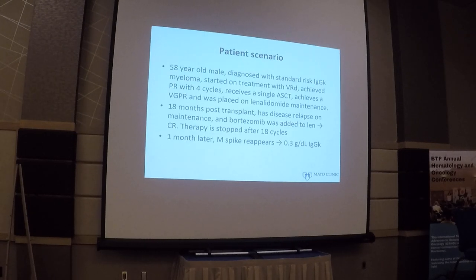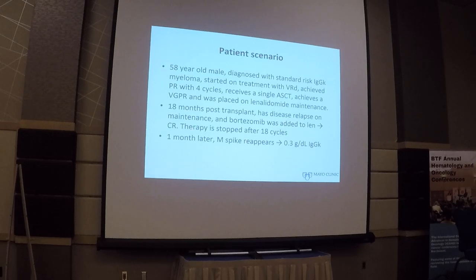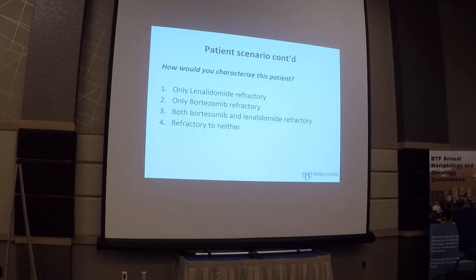The treatment is stopped and one month later, the M-spike reappears and is now 0.3 grams per deciliter of IgG kappa. Focusing on the patient who achieved CR, the protein went up to 0.3 one month after the patient stopped bortezomib and lenalidomide. How would you characterize this patient: only len-refractory, only bortezomib-refractory, dual-refractory, or refractory to neither?